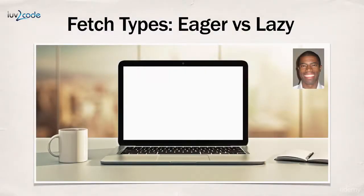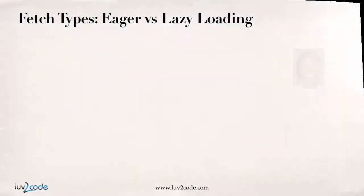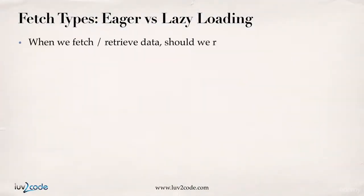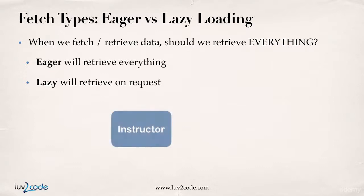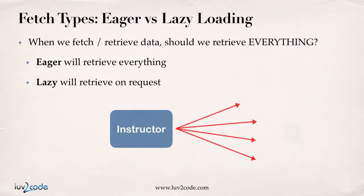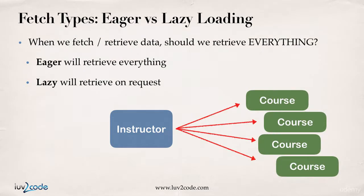In this video, we're going to cover fetch types for eager versus lazy. When we load data or retrieve or fetch data, the question is should we retrieve everything? An eager load will pull in everything. Lazy load will retrieve data only on request. Imagine we have an instructor — an instructor has a list of courses. Depending on the loading type, that'll determine when and how the data is loaded from the database by Hibernate.